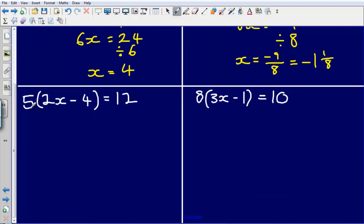Next one I've got 5 bracket 2x minus 4, so again expand the brackets first. 5 multiplied by 2x gives me 10x, 5 multiplied by minus 4 gives me minus 20. That is equal to 12.